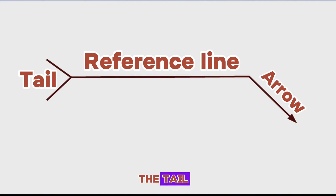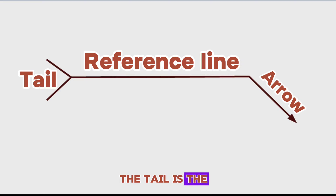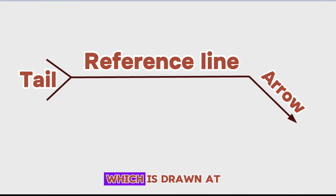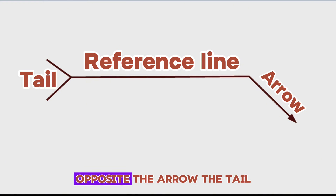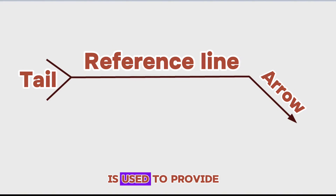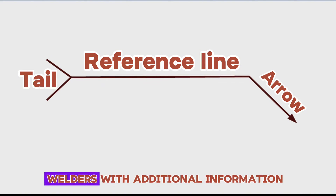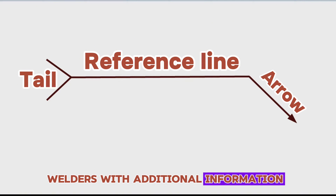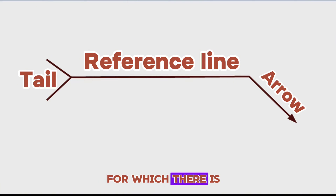The Tail. The tail is the last part of the welding symbol, which is drawn at the end of the reference line opposite the arrow. The tail is used to provide welders with additional information for which there is no provision elsewhere.